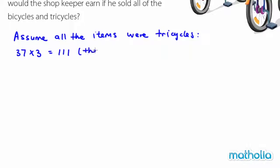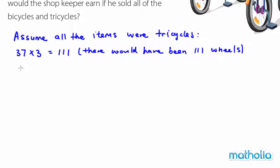There would have been 111 wheels. However, this is an estimate, so we have to find the difference. We know it's an overestimate because there are only 90 wheels. So the difference would be 111 subtract 90, and the difference is 21. This is the quantity overshot.